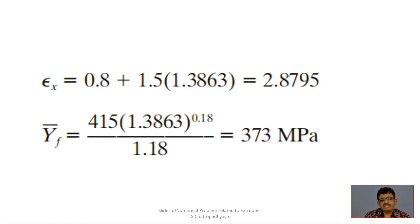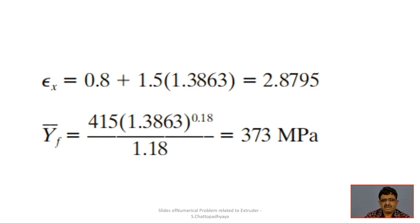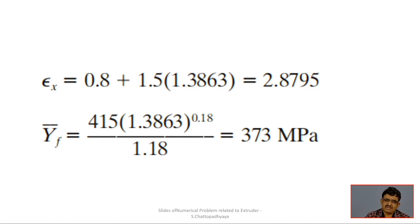For the flow stress, the formula is k·ε^n divided by (1 + n). With k = 415 MPa, ε_x = 2.8795, and n = 0.18, the denominator is 1 + 0.18 = 1.18. After calculation, the average flow stress Ȳ_F comes out to 373 MPa. So we have determined both the extrusion strain and the average flow stress.